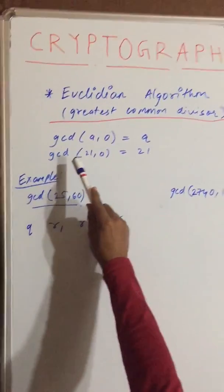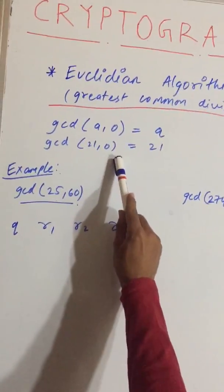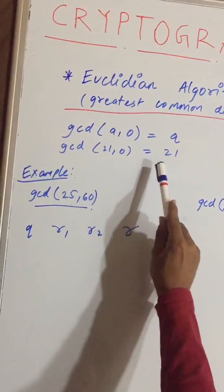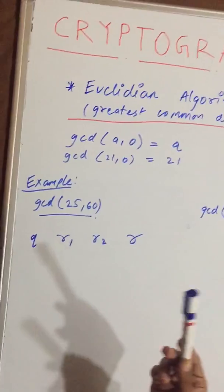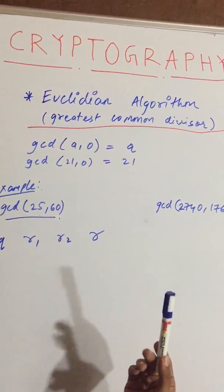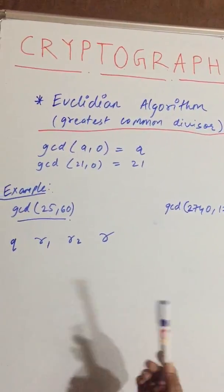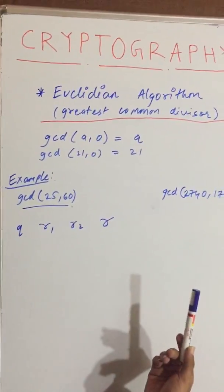If GCD of 21 comma 1, it will be equal to 1, because 1 can be multiplied with both the numbers 21 and 1.